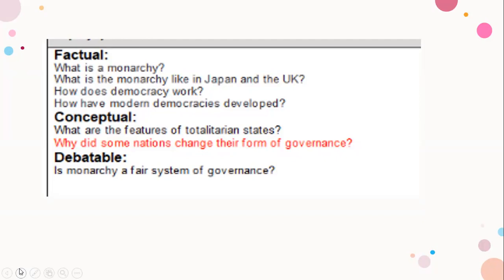What is the monarchy like in Japan and the UK? So this clearly indicates that we will discuss Japan and UK. How does democracy work? How have modern democracies developed throughout time, history of democracy? How did it all start?